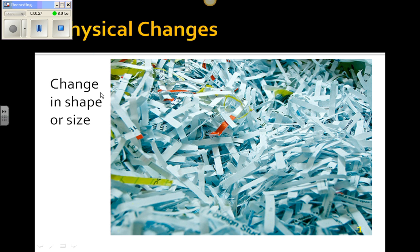There are three main types of physical changes. One is a change in shape or a change in size. If something's just changing its shape or size, that just means it's a physical change — there's no new substance. For example, shredding paper. When you shred paper, the paper changes shape and size, but it's still paper.